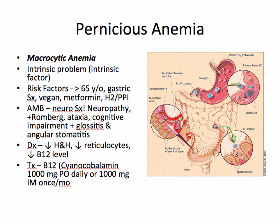Treatment is to give B12 — you can give 1000 mcg daily by mouth, or 1000 mcg once IM a month. The reason you can split this into monthly IM injections is because it bypasses the GI tract, so you don't have to worry about intrinsic factor.